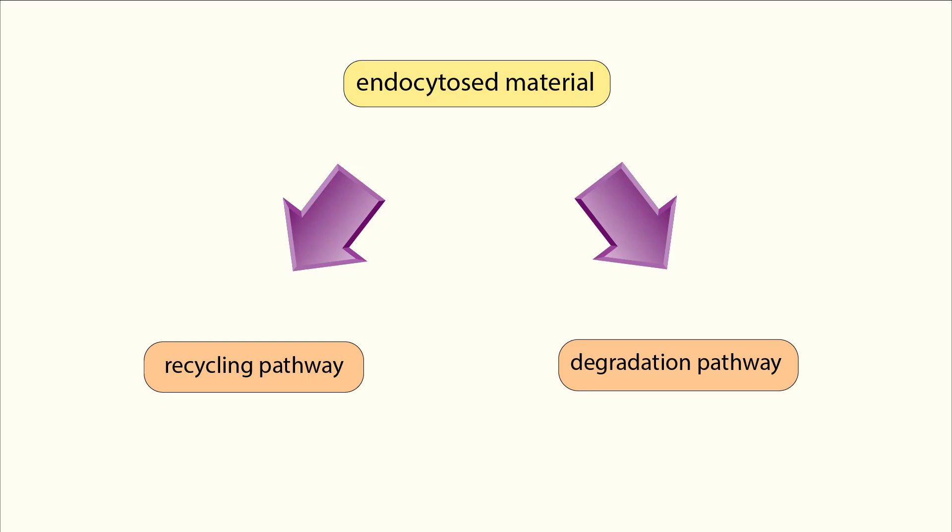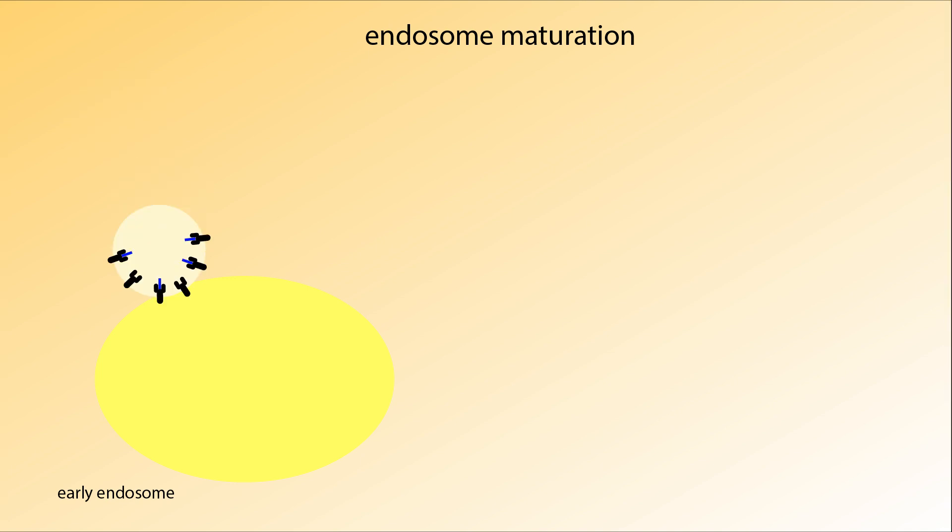This leads us into the second step of endocytosis, sorting. There are two main destinations for endocytic material. They can be recycled to the cell surface, or they can be degraded in the lysosome. All incoming vesicles first fuse with an early endosome, where their cargo is sorted into one of these pathways.